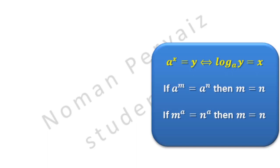Next, if bases are same, then powers of them will be equal. So, if A raised to the power m equals A raised to the power n, then m will be equal to n. Last is, if powers are same, then bases of them will be equal. So, if m raised to the power A equals n raised to the power A, then m will be equal to n.